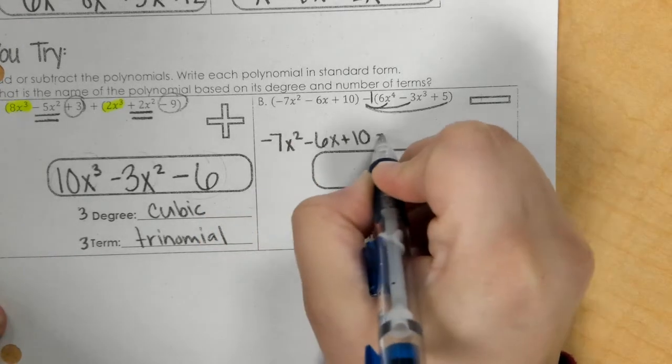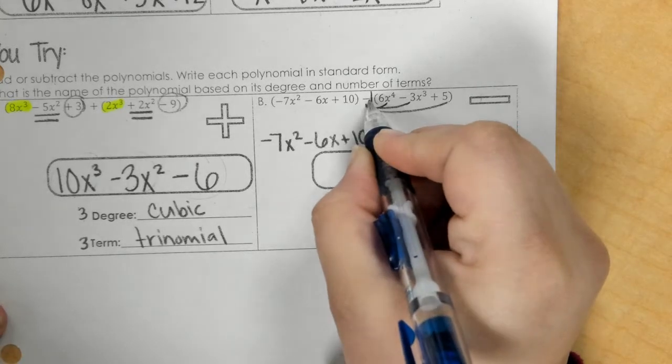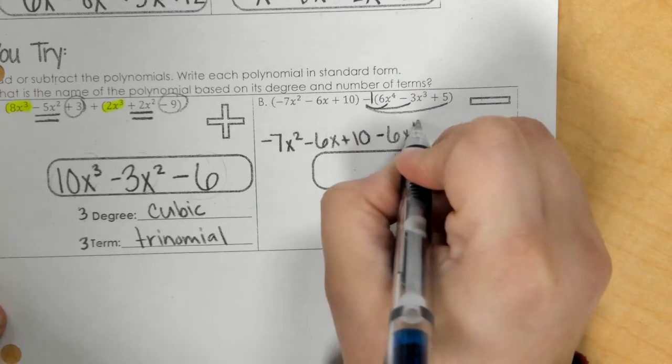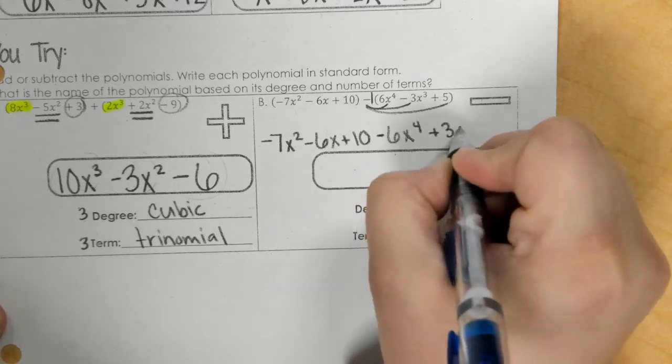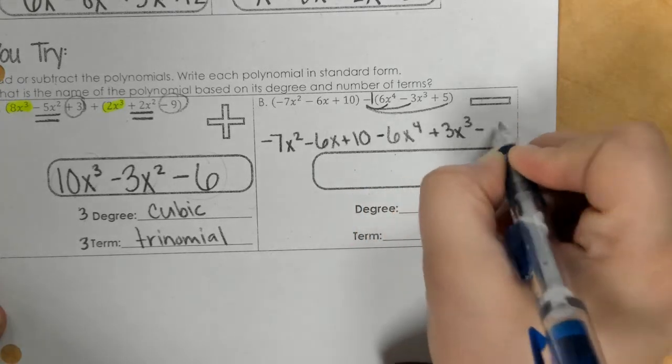The bottom, we change our signs to be negative 6x to the fourth, positive 3x to the third, and negative 5.